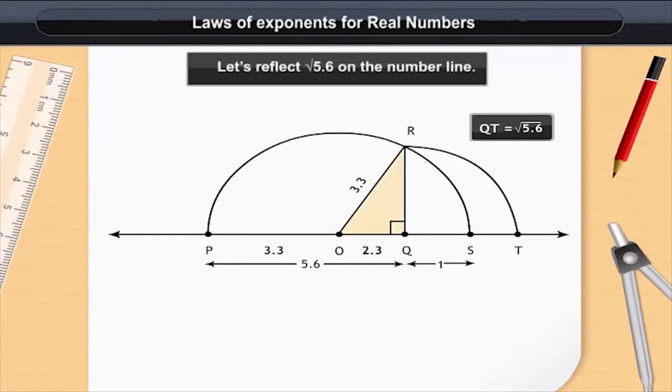Using the Pythagoras theorem, in triangle OQR, QR square is equal to OR square minus OQ square is equal to 3.3 square minus 2.3 square.